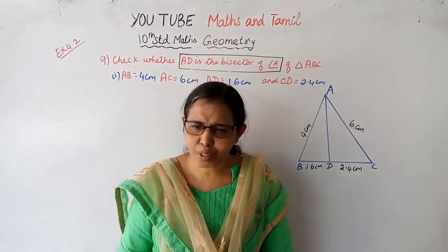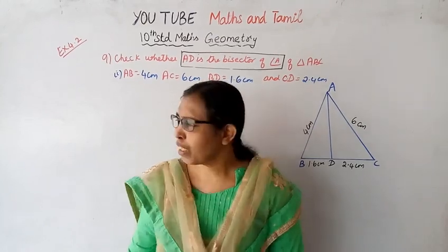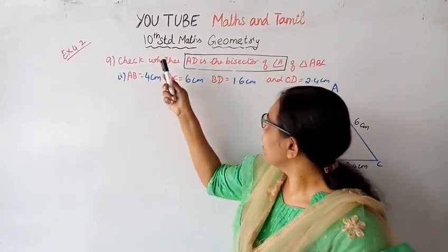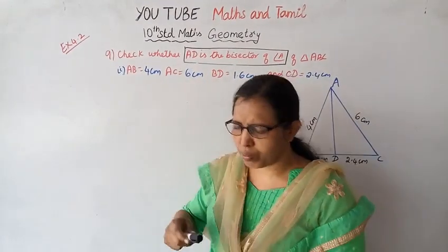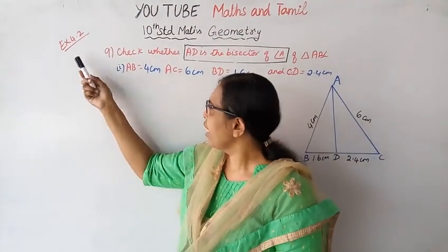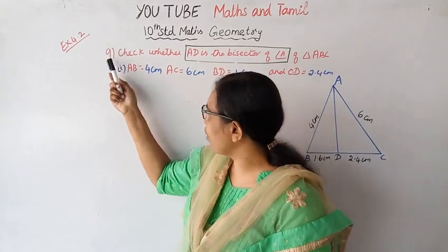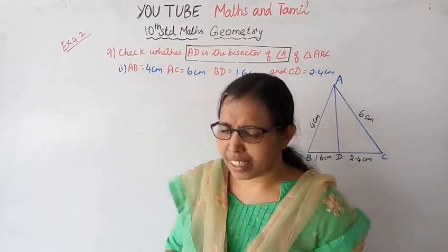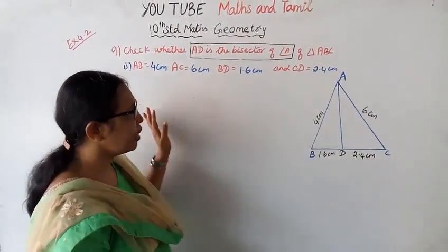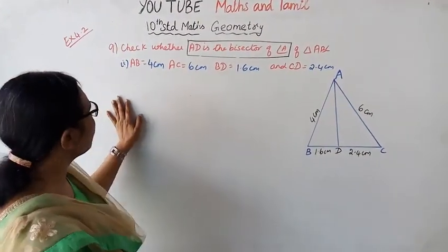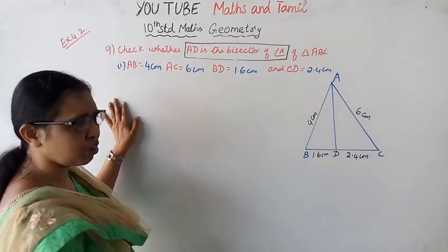Hello students, welcome to Max and Tommy channel. Geometry is an important two marks topic. Exercise 4.2 is the 9th standard, subdivision 2. Subdivision 1 covers the angle bisector formula.